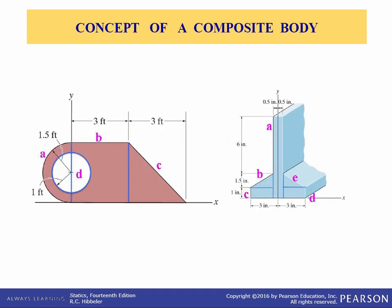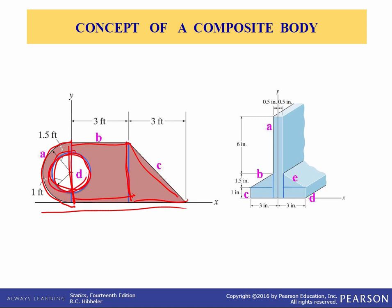Many industrial objects can be considered as composite bodies made up of a series of connected, simple shaped parts — for instance, a rectangle, a triangle, a semicircle, or a hole. Here you have a part that consists of a triangle, a rectangle or square, a half circle, and a circle representing a hole. When we use holes, we just negate the area of the hole in the composite body formulation. Knowing the location of the centroid or center of gravity of the simple shaped parts, we can easily determine the location of the center of gravity for these more complex composite bodies.